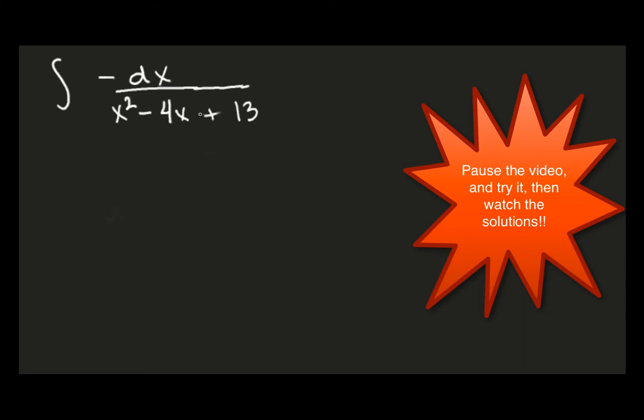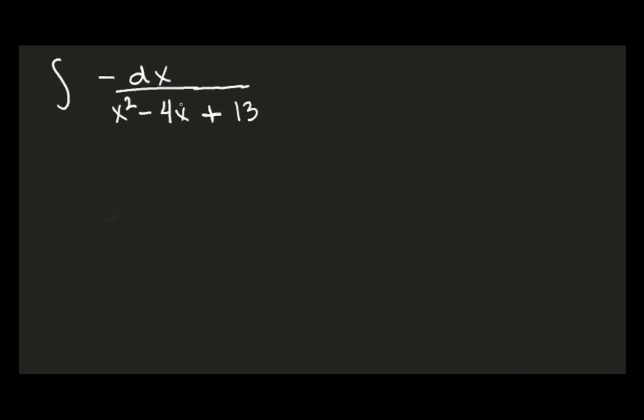So at first glance, it looks like a nightmare because you can't do u sub. You can't do it separately. There's no long division to be done. And then you're like, let me try by parts. Well, that's not going to work. How about partial fractions? Can we factor this denominator? Are there any factors of 13 that add up to negative 4? No, there aren't. So we have to ask ourselves, what the heck is going on? Then you have to start thinking outside the box.